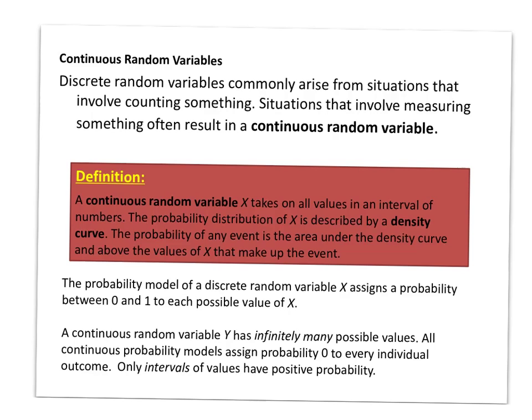That's an example of a continuous random variable. The probability distribution of X is described by a density curve. A density curve is a curve in which the area underneath that curve is equal to exactly one. We actually think of the normal curve as a density curve, because we see that the area underneath that is one in basically all possible outcomes.